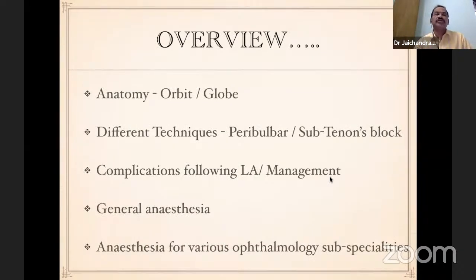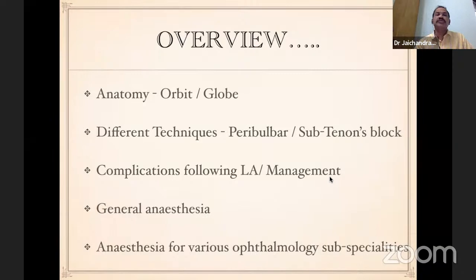This is how I thought I will cover ophthalmic anesthesia. First and foremost, I will be focusing on regional ophthalmic anesthesia — for which we need to know about the anatomy of the orbit and globe, and the different techniques we follow. Then the complications following administration of blocks and their management. Then I will move on to general anesthesia and finally cover anesthesia for various ophthalmology subspecialties.